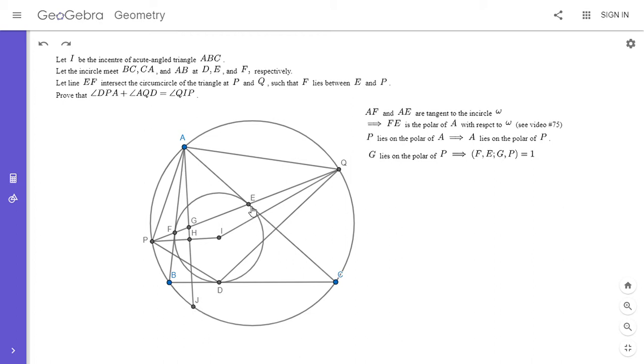So I'm going to write that out. So we're projecting through A onto the circumcircle, which I've called gamma. So F goes to B, E goes to C, G goes to J, and P stays at P. And it's still equal to one. And we can do the same thing. So everything we've done, we've just done with respect to P, but we can do the exact same thing with respect to point Q.